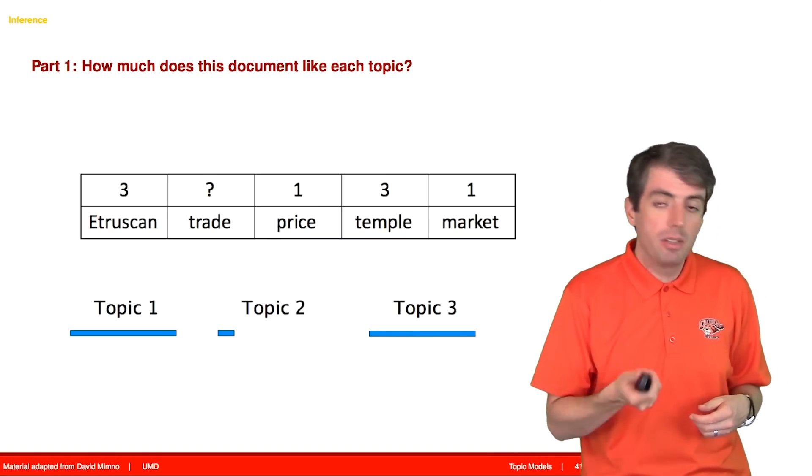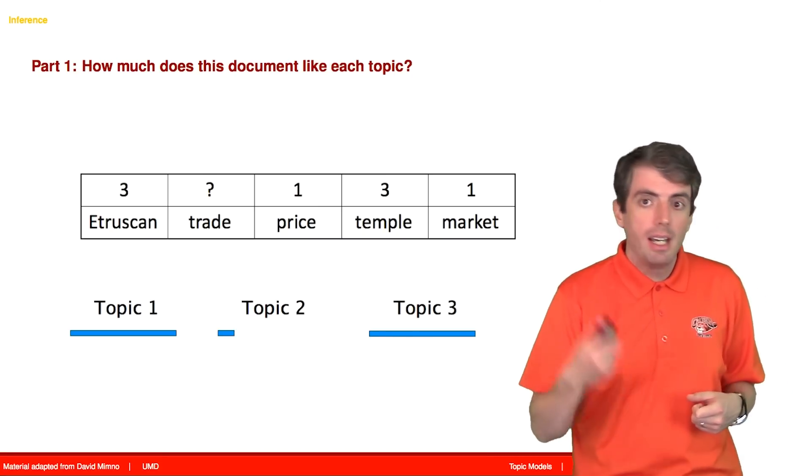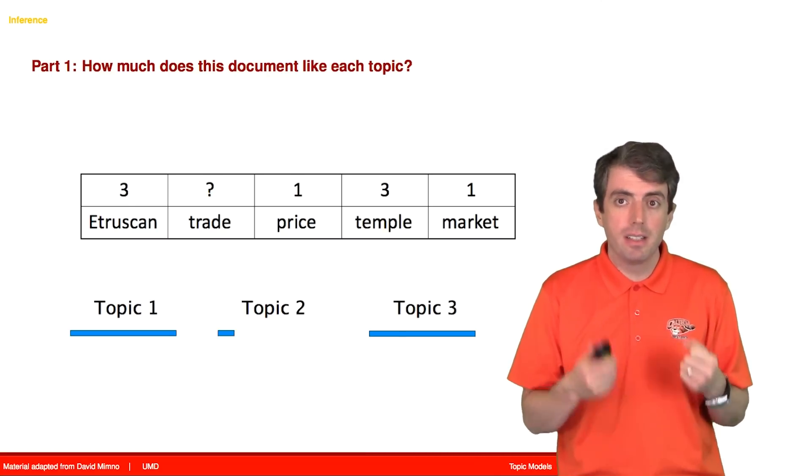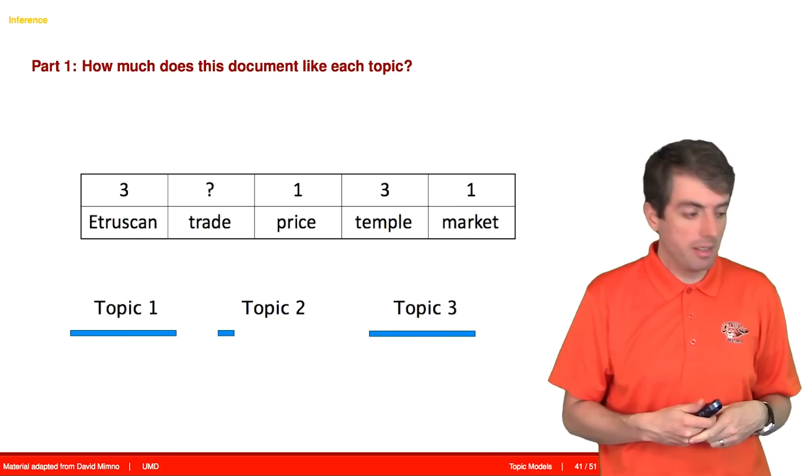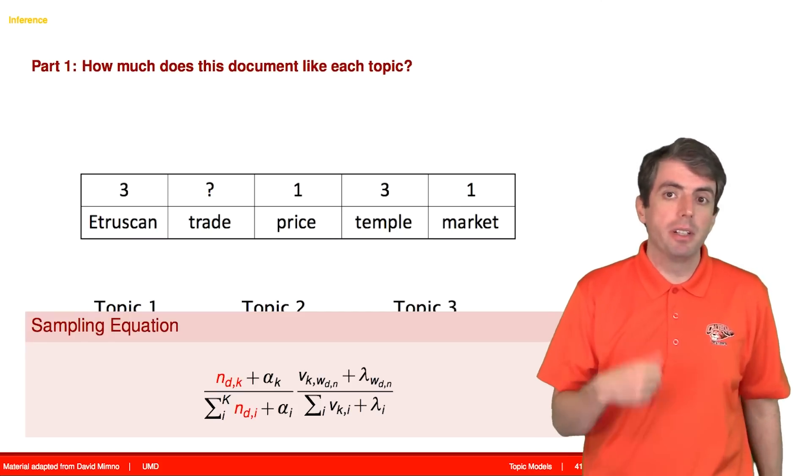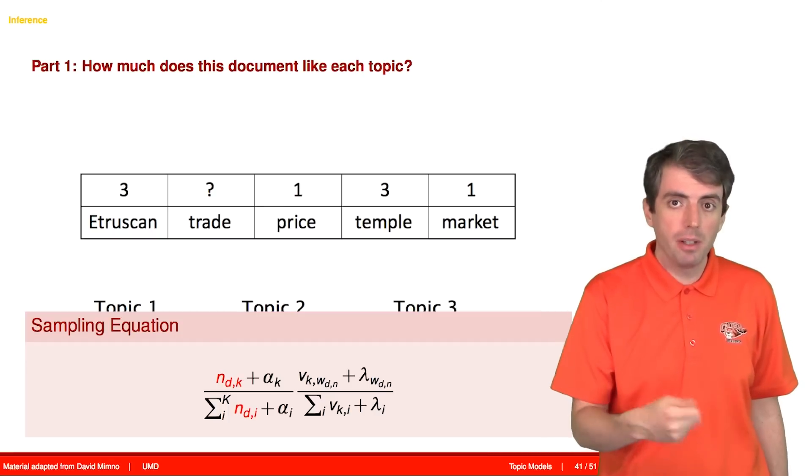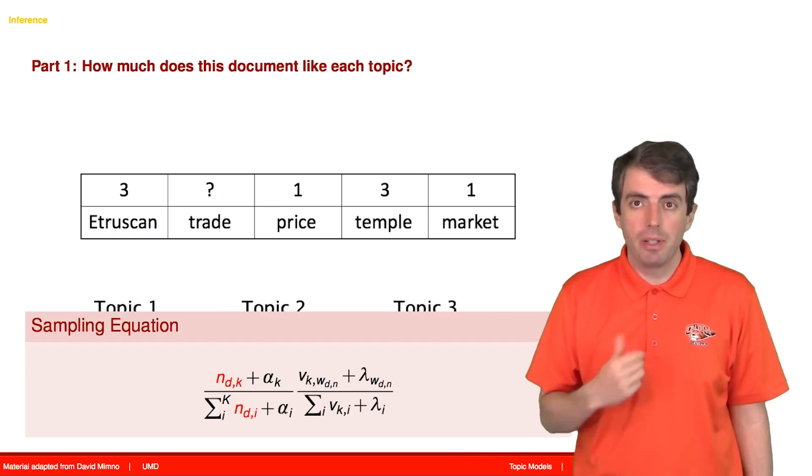And so notice that topic 2 is not completely zero. Topic 2 still has a little bit of probability because of the Dirichlet parameter that we talked about before that acts like a smoothing term. But the primary contributor is how many times the document has used this topic before. That's the n counts that we talked about before.